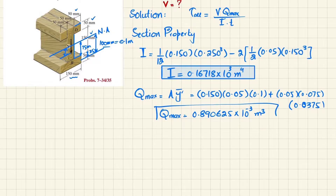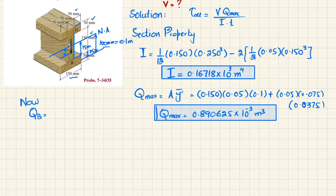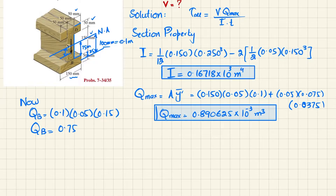Now we find Q at B because we have a glue seam there. For Q_B, the area is the flange: 150 mm × 50 mm, and its centroidal distance from the neutral axis y̅ = 0.1 m. So Q_B = 0.150 × 0.05 × 0.1 = 0.75 × 10⁻³ m³.